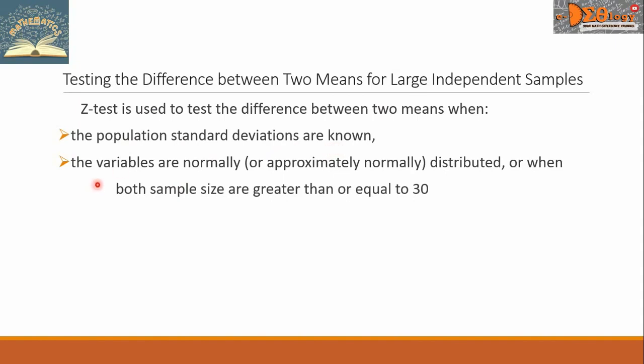Second, the variables are normally or approximately normally distributed, or when both sample sizes are greater than or equal to 30.